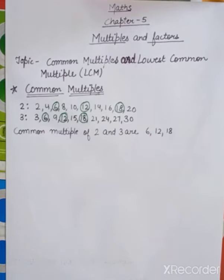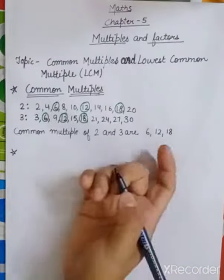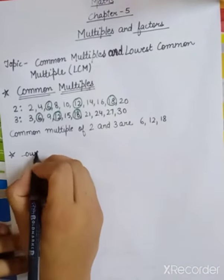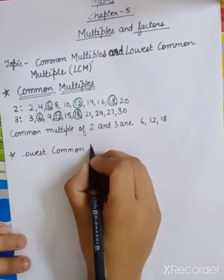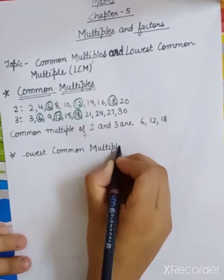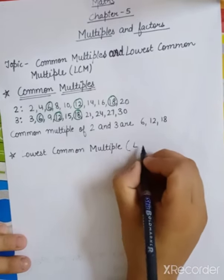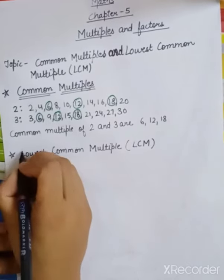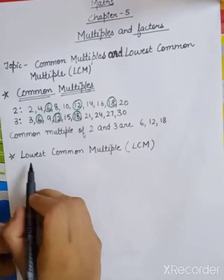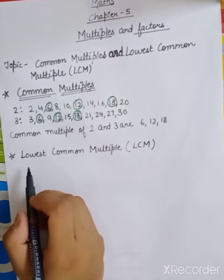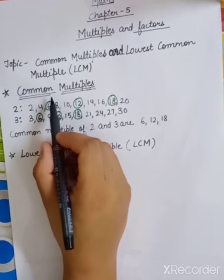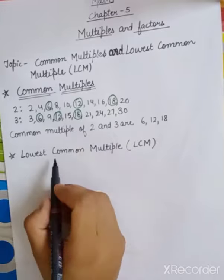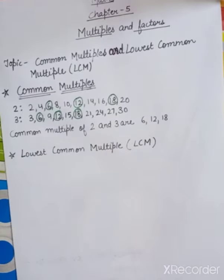Now let us understand the concept of the Lowest Common Multiple. The short form is LCM. As the name suggests, 'lowest' means the least or smallest common multiple. So we have to find out the lowest common multiple.